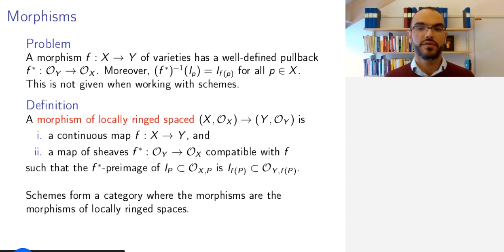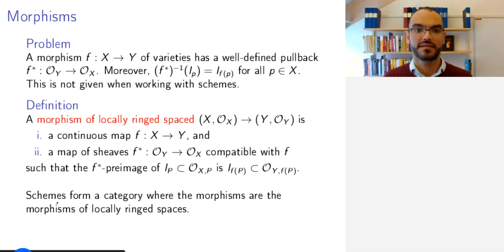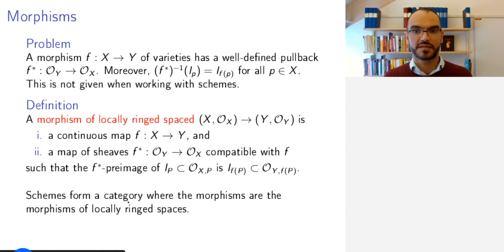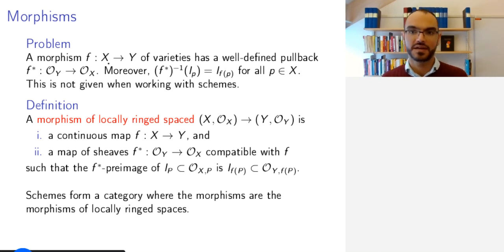With this we can now define morphisms of schemes simply by saying that a morphism between schemes is a morphism between their corresponding locally ringed spaces, so that schemes form a category that is a full subcategory of the category of locally ringed spaces. Note also that by the preamble here, pre-varieties also form such a category.